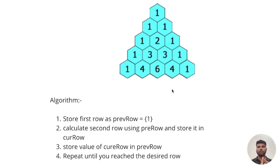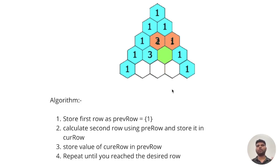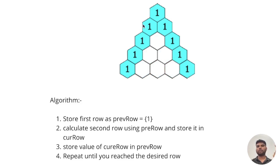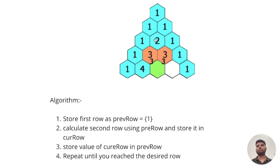Now let's look at the algorithm. We are going to maintain two variables: previous row and current row. In previous row we store the value of the row already calculated. For example, if we want to calculate this row's values, we store the previous row's values, then calculate the current row based on those. At the end of each iteration, we swap previous row with current row and continue until we reach the desired row.